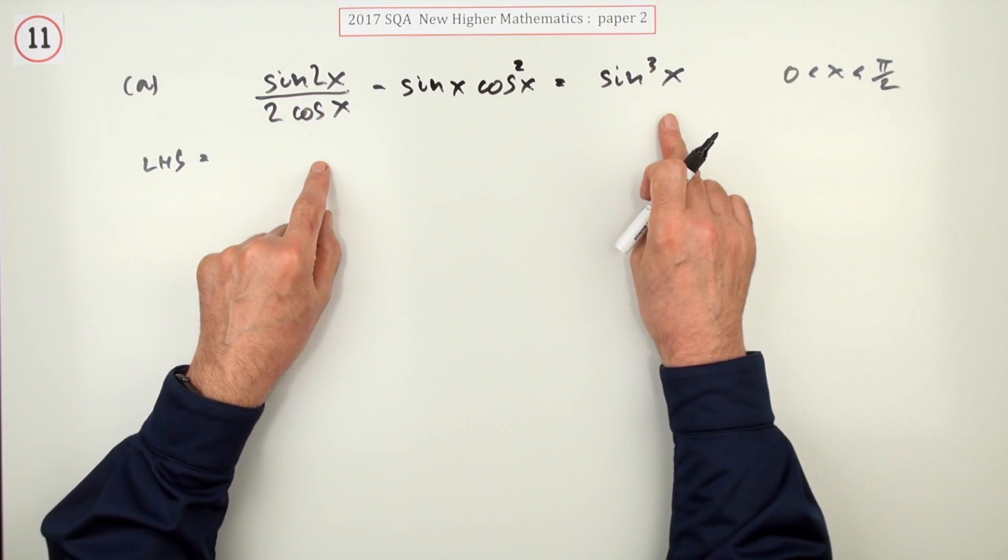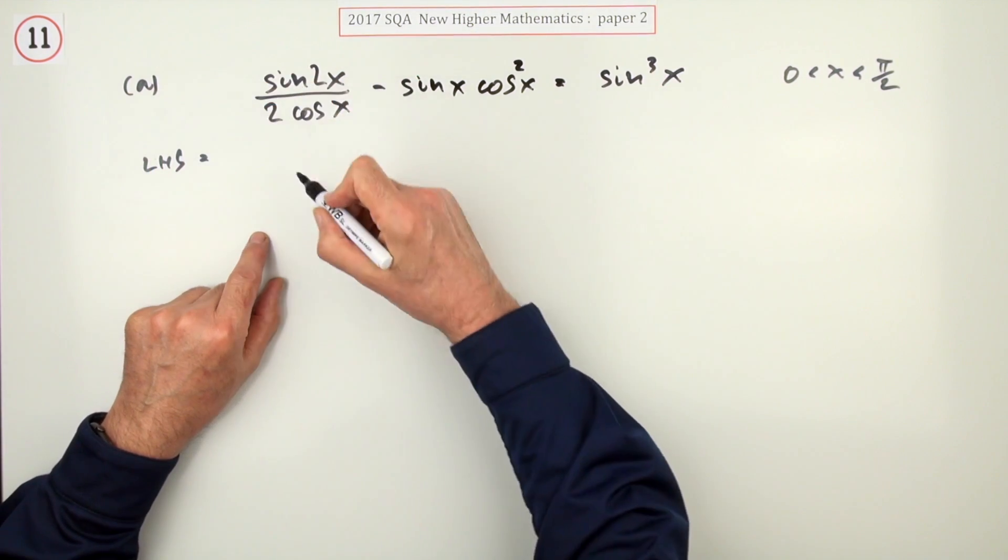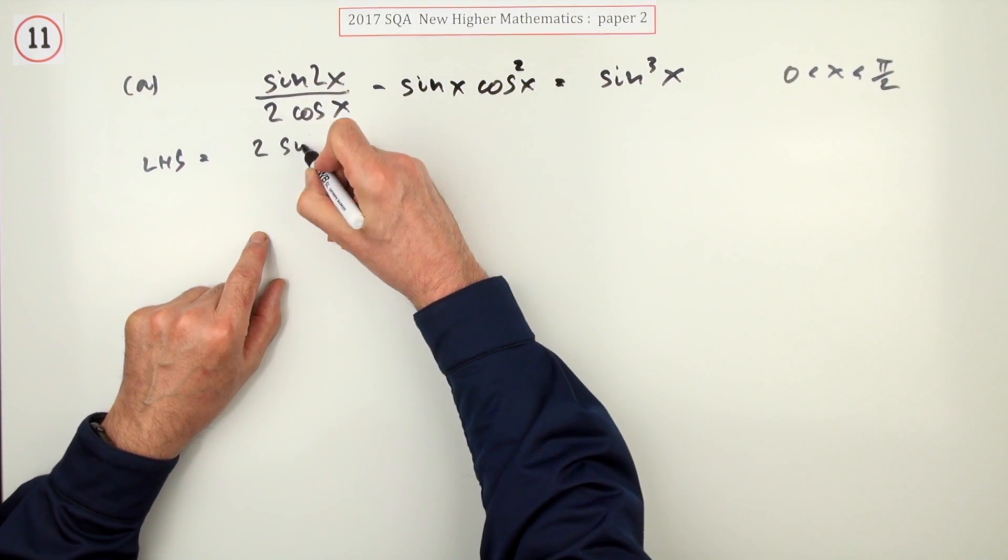So, taking this side and comparing it, this has got a 2x, and this doesn't have any 2x's. So, get rid of that sine 2x first. What can it be replaced by?